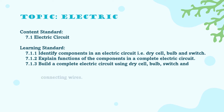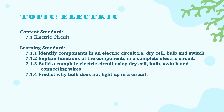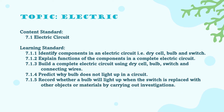7.1.3 builds a complete electric circuit using dry cell, bulb, switch, and connecting wires; 7.1.4 predict why the bulb does not light up in a circuit; and 7.1.5 record whether the bulb will light up when the switch is replaced with other objects or materials by carrying out investigation.